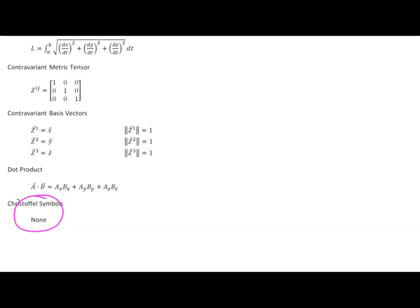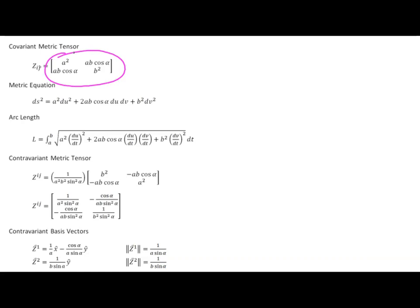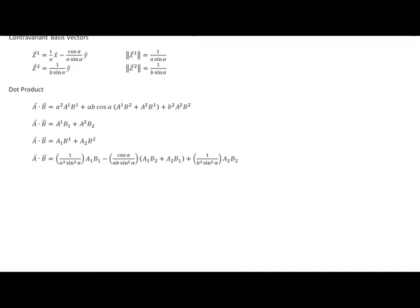The same thing is going to happen for affine coordinates. The covariant metric tensor for affine coordinates has all constant elements — the scaling factors and the skew angle. So the partial derivatives are all going to be zero, and just like Cartesian coordinates, there are no non-zero values for the Christoffel symbol in affine coordinates.